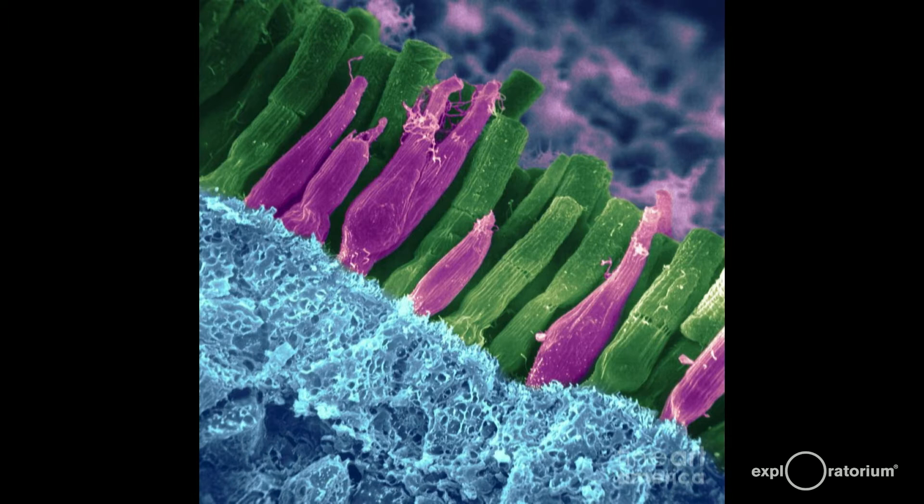The retina contains two types of light-sensitive cells: low-light sensors called rods, here seen colored green, and color-sensitive sensors called cones, here colored magenta.